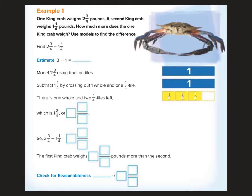One king crab weighs 2 and 3 fourths pounds. A second king crab weighs 1 and 1 fourth pound. How much more does the one king crab weigh? Use models to find the difference.